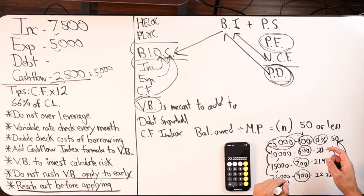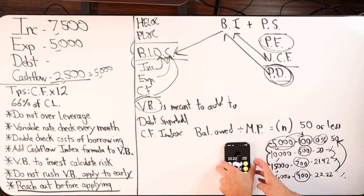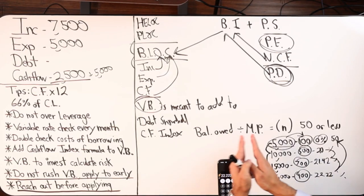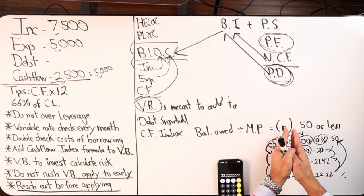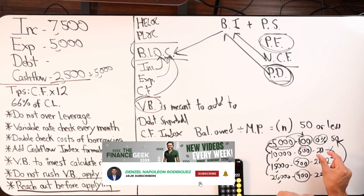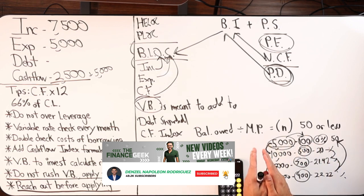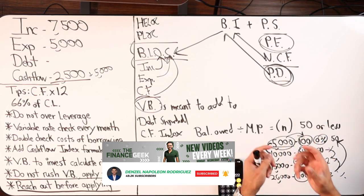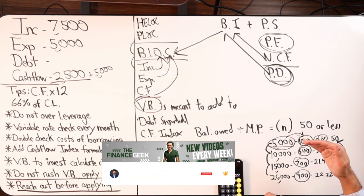Very powerful strategy there. That's the formula: you take the balance owed, divide it by the monthly minimum required payment, you get a number. If it's less than 50, you go in order. The lower the number, the closest to zero, that's the debt you would pay off first, and then you would continue up from there.